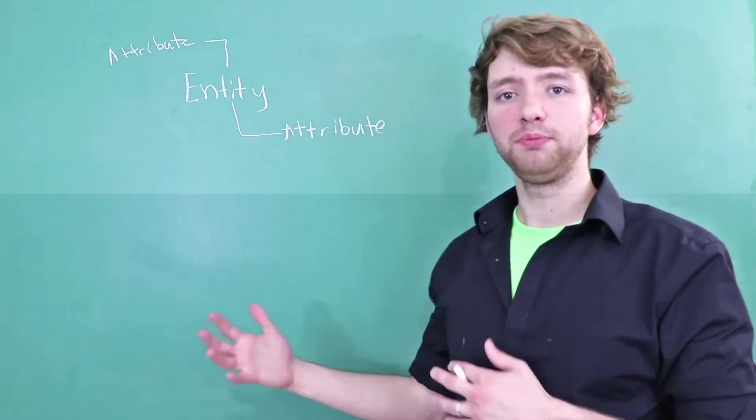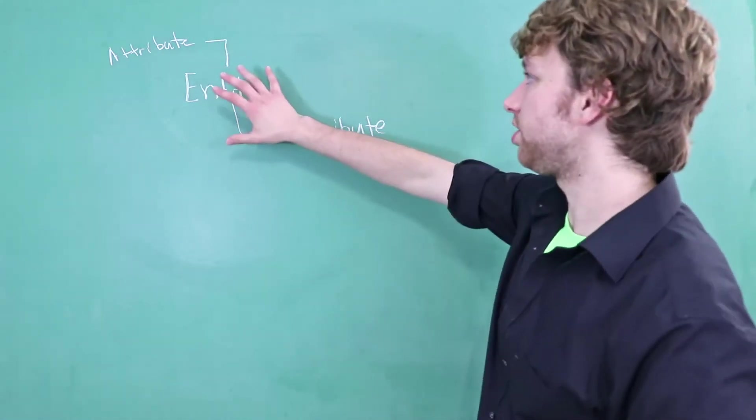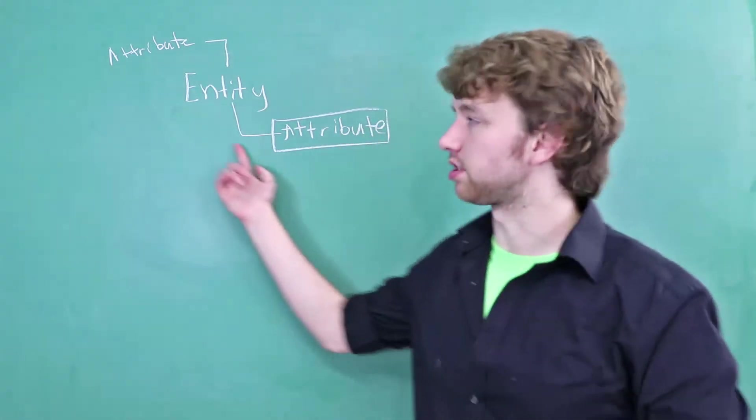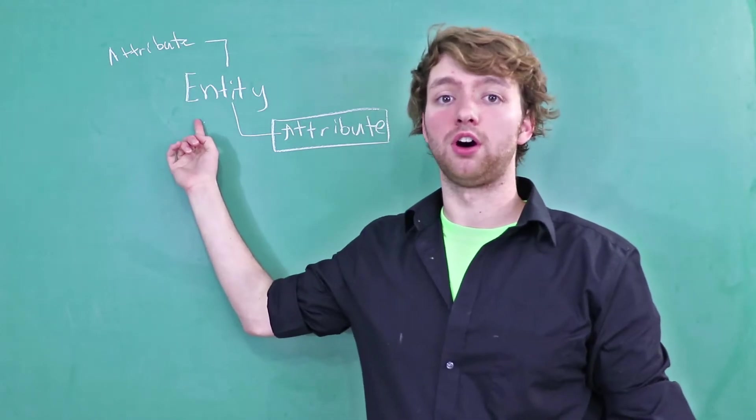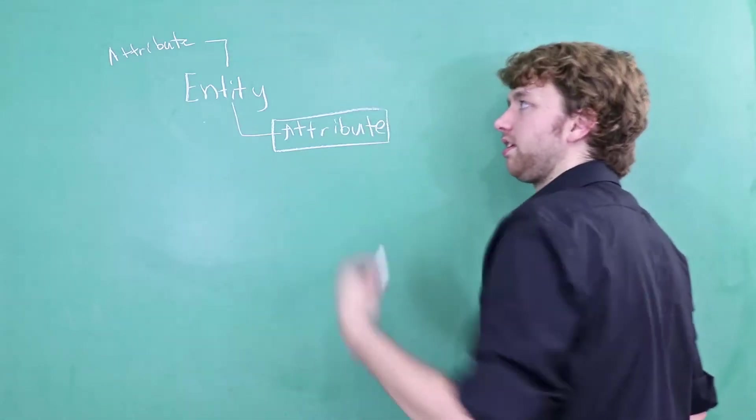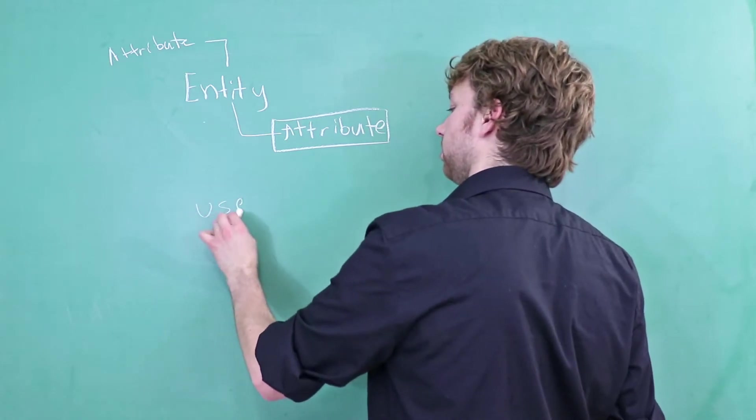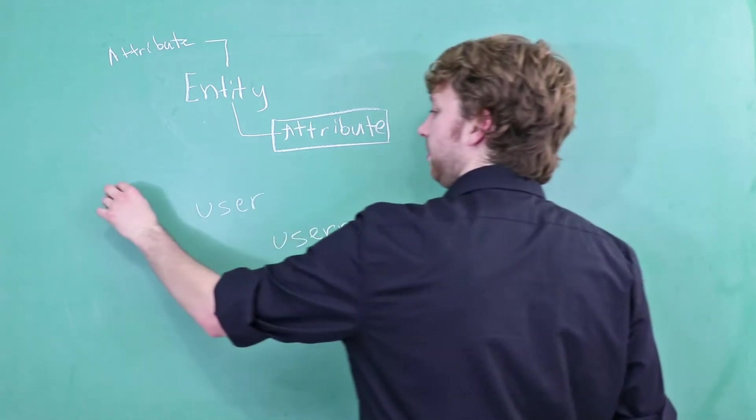So a relationship is when some piece of data depends on another piece of data. In this situation, if we're trying to store some data about something, you can say this data depends on the entity. If you wanted to make this a little bit more concrete, we can have a user and one of his attributes could be his username or his email.